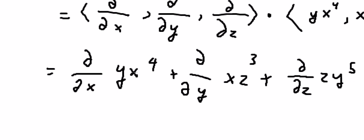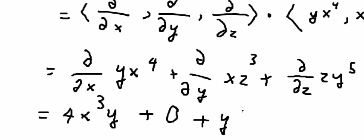So first derivative with respect to x in this situation, we got about 4x to the power of 3y. This one we don't have y, we got about 0. And this one we got about y to the power of 5.